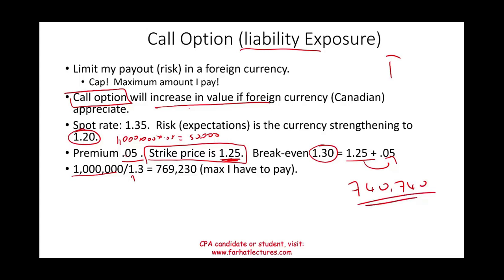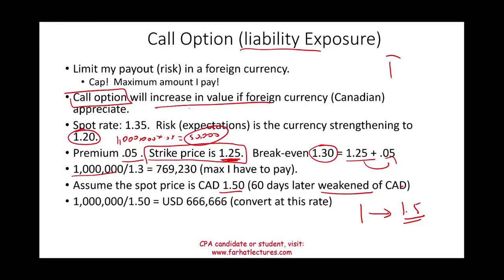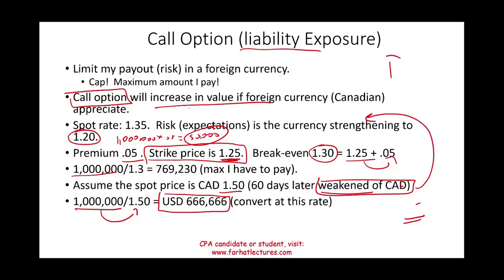Now assume that 60 days later the spot rate is 1 USD = 1.50 CAD — the Canadian dollar actually weakened. In that case, you let the option expire. Yes, you did lose the $50,000 premium, but you go to the market and buy 1 million CAD at 1.50, paying only $666,666. The Canadian dollar weakened — your risk was the opposite — so you let the option expire, absorb the fee, and benefit from the favorable market rate.